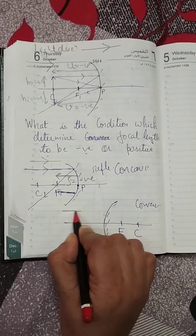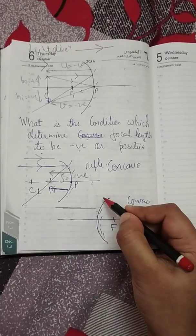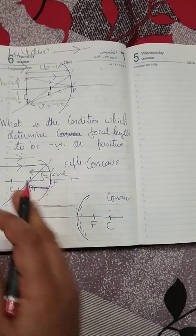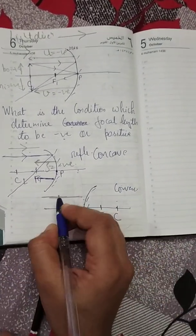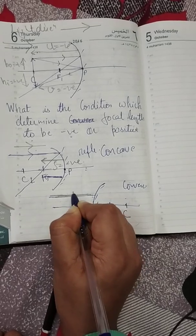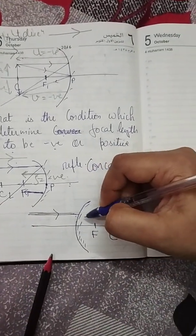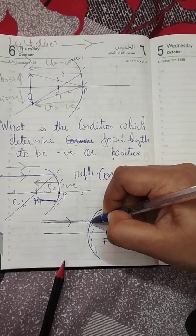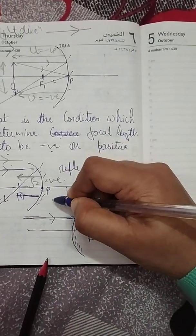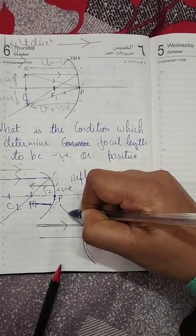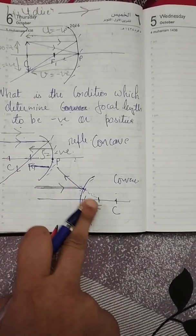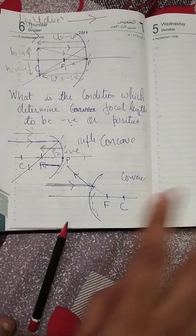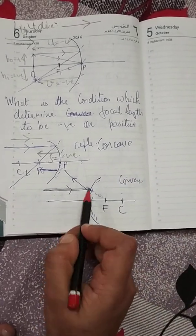Now, reflection only occurs at this side of the mirror, not the other side, because this is the polished side — light cannot pass through it. So if light comes parallel to the principal axis, after reflection it will appear as if it is coming from the focus. We use the word 'appear' here.